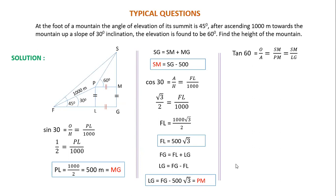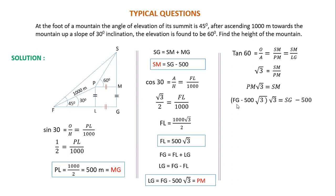Now take tan 60. Tan 60 is opposite upon adjacent. The opposite is SM and the adjacent is PM. Since PM equals LG, we can write: tan 60 = SM/PM, which gives root 3 times PM = SM. Substituting PM = FG minus 500√3, we get (FG minus 500√3) × √3 = SM. And SM = SG minus 500. This is our first equation.